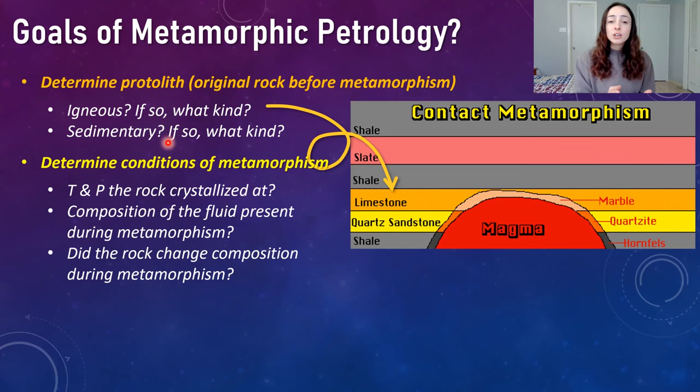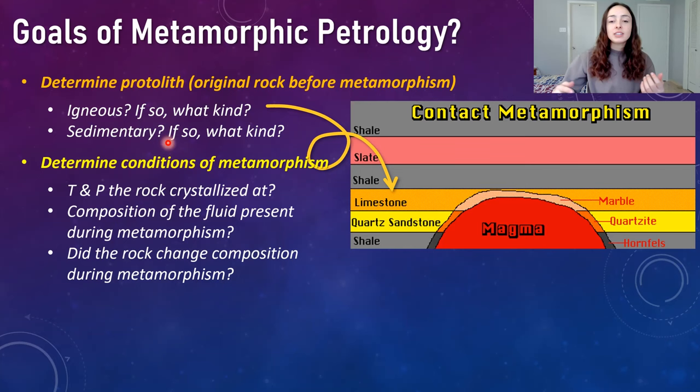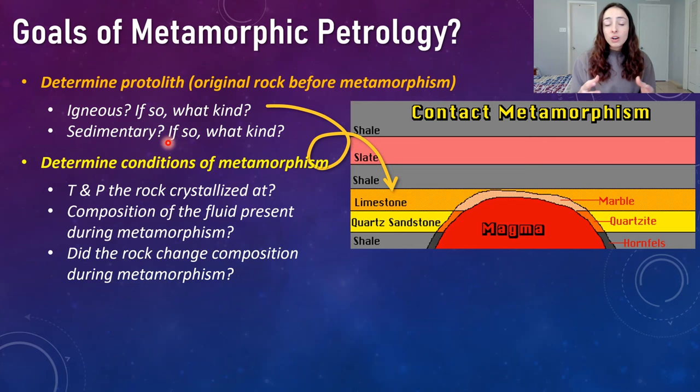The second goal is to determine the conditions of metamorphism: the temperature and pressure at which the rock crystallized, the composition of any fluid present during metamorphism (which may have caused compositional changes to the protolith), and whether the rock changed composition during metamorphism. The third major goal is determining the structural history — was the rock structurally deformed, and did deformation occur before, during, or after metamorphism?